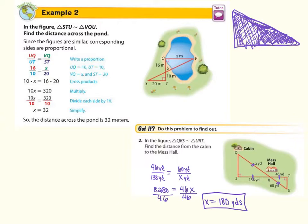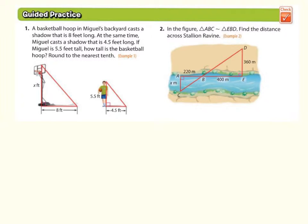Let's get some guided practice in. Number one, a basketball hoop in Miguel's backyard casts a shadow. So here we've got the shadow thing again. So we're going to be given the distances of the shadow, and we're going to be given the human's height in order to determine the basketball hoop height. So let's set up our proportion. We have the human shadow, 4.5, and then the other shadow is 8 feet.